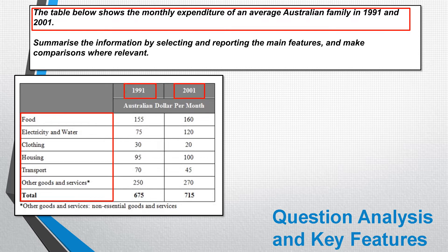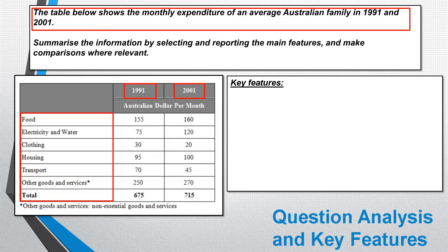We've also noticed there's a star which indicates that one category has extra information — that other goods and services refers to non-essential goods and services. So that would include things you spend on for leisure and entertainment, things that are not essential such as food and water. So we need to pick out the key features from this table, and remember we have to pick out key features which show the purpose of the chart.